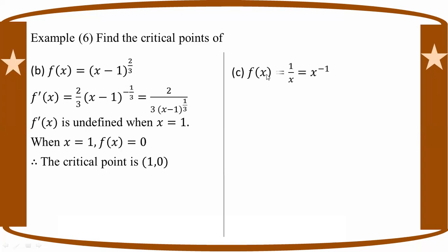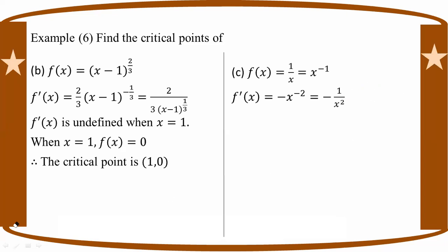Okay, the last one, number c. F prime equals 1 over h, which is equal to h to the power minus 1. We write the differential of f prime equals 0.